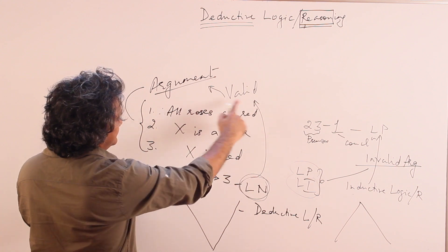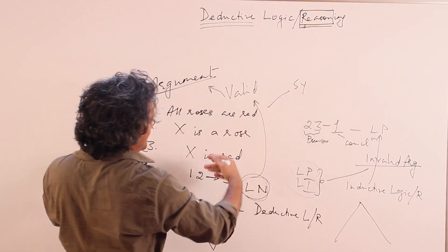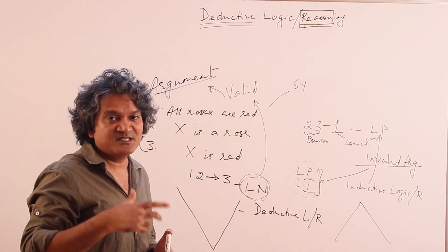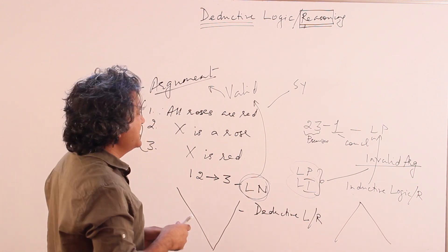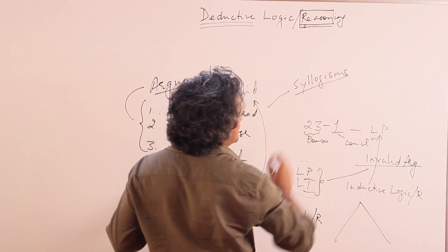Now this - there is also an official word for this. It is obviously an argument, but this type, arguments are of various types as you will also see in critical reasoning, which we will do later. So arguments of this type are known as syllogisms.